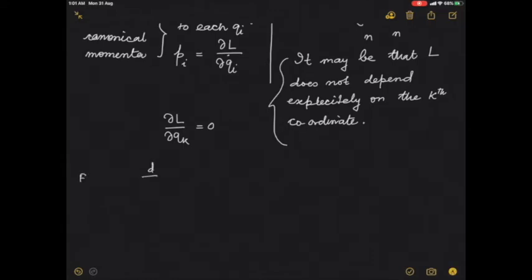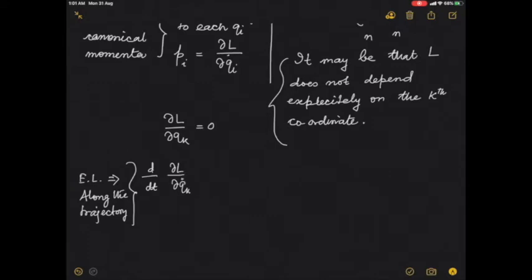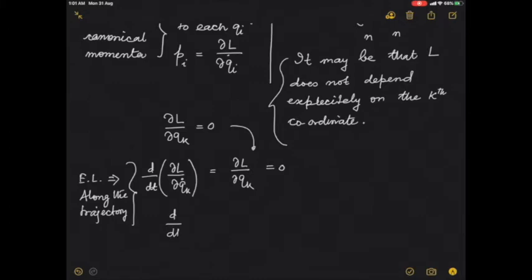The Euler-Lagrange equation tells you along the trajectory: d/dt(∂L/∂q̇_k) = ∂L/∂q_k, which equals zero if L doesn't depend on the k-th coordinate. This means d/dt(∂L/∂q̇_k) = 0, and ∂L/∂q̇_k is nothing but ṗ_k.